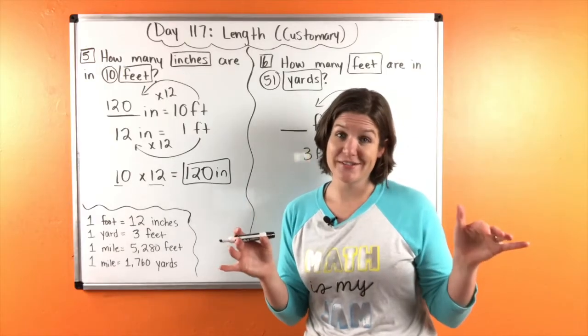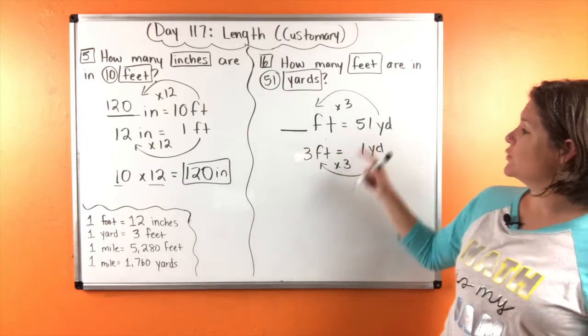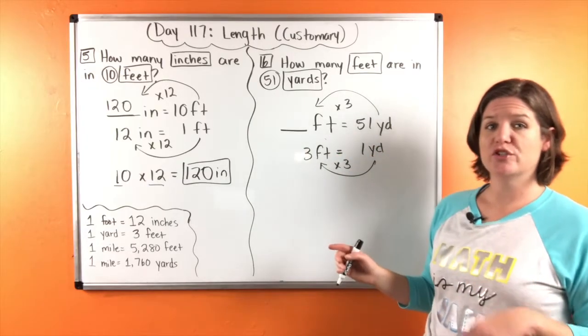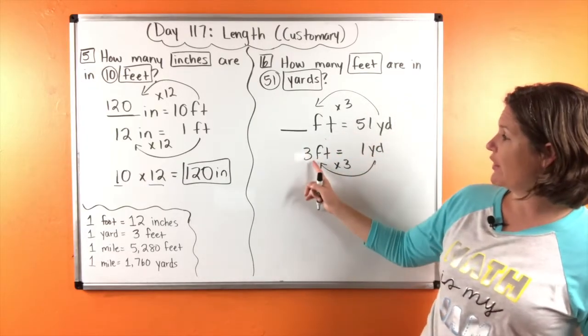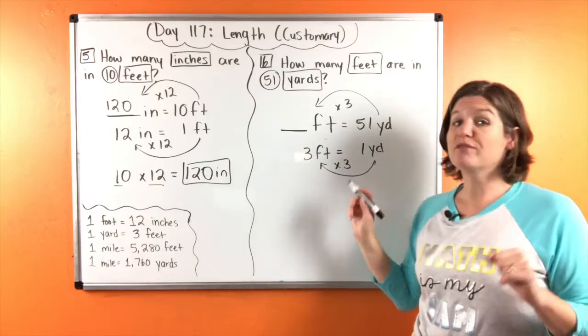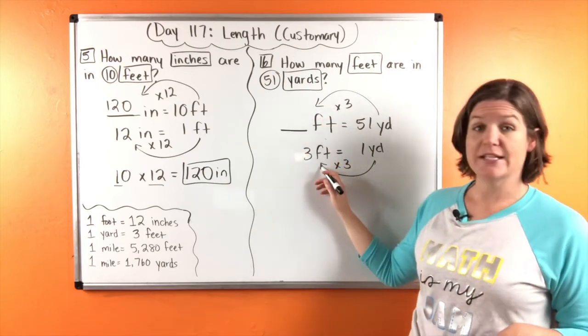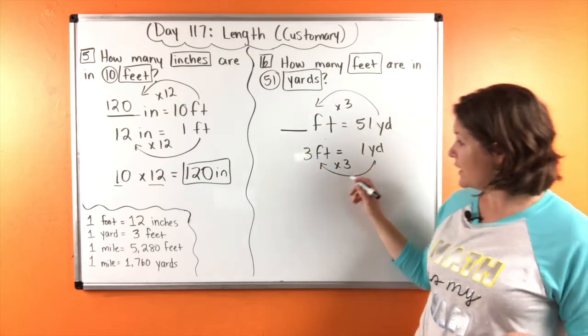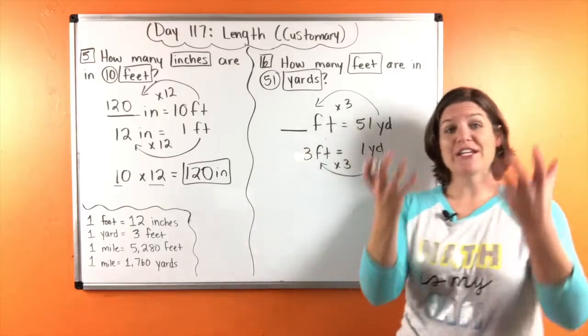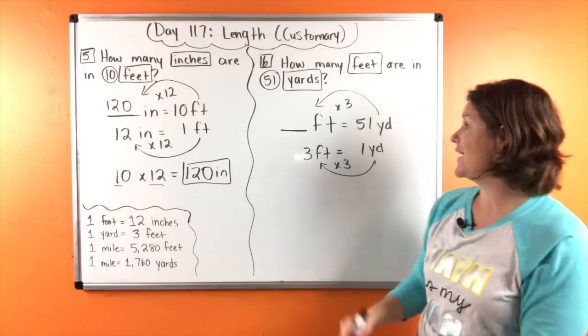Moving on to number six, we have how many feet are in 51 yards? Well, according to our reference sheet, we know that three feet are in one yard. So we're converting from yards into feet. So one to three, we're increasing. So we're multiplying by three on the bottom and three on the top.